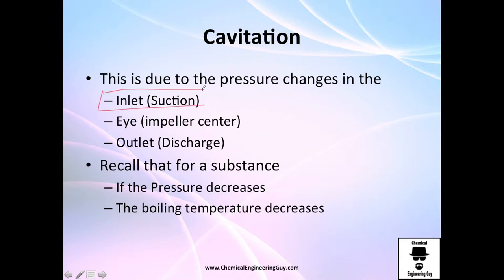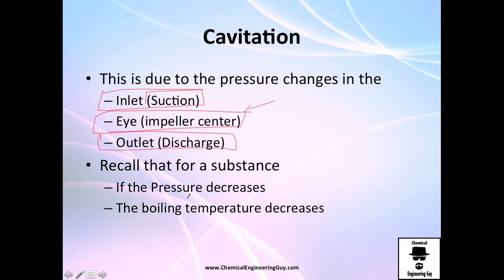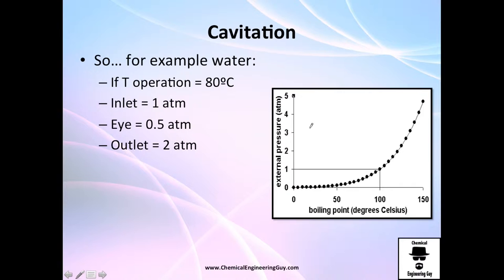The most critical location is the eye of the pump — the outlet is less of a concern. If you remember vapor pressures and how substances evaporate, recall that vapor pressure decreases the boiling point as pressure decreases. For example, with water: if you are using water in piping at 80 degrees Celsius, you might not expect it to boil, but you need to check the vapor pressure.